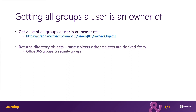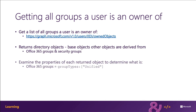You can do that by going to the /me/ownedObjects endpoint or going to a specific user, as shown on the slide. You can examine the properties of a directory object to determine what type of group it is. For example, an Office 365 group is indicated by the property groupTypes: unified, and a security group is indicated by securityEnabled set to true.